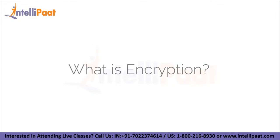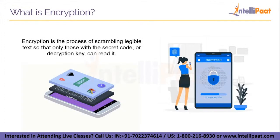What is encryption and how does it help? Encryption is a process of scrambling legible text so that only those with a secret code or decryption key can read it. Encryption can aid in the protection of data sent, received, and stored on a device. Text messages on your phone, jogging records on your fitness watch, and financial information provided through your internet account are all examples.